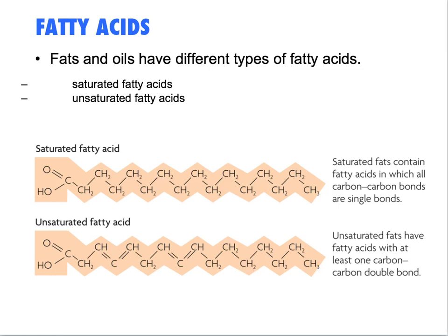Three-dimensionally, saturated fats tend to be fairly linear and pack together very well. These overall tend to be your waxes and solid fats. Unsaturated fats tend to have kinks — a distinct bend — and they don't pack or sit together very well. That's what makes them oils at most room temperatures. So we call them unsaturated.